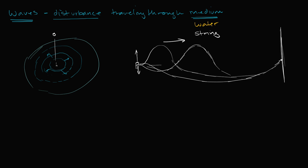What just happened there? When I jerk the string up, I'm disturbing those string molecules right next to my hand. Then they're pulling on the string molecules next to them, pulling on the string molecules next to them. And so then you have this traveling lump. These are both examples of waves — disturbances traveling through a medium.